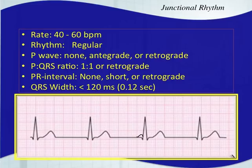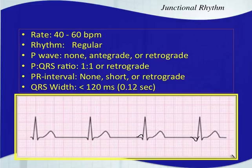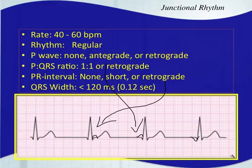So it could be a short PR interval, or the P wave could be inverted like an ectopic atrial rhythm but with that short PR interval. Or it could be retrograde — occurring after the QRS complex. Antegrade P waves will definitely have a short PR interval, either positive or negative. A retrograde P wave is also possible, or you might not see a P wave at all.